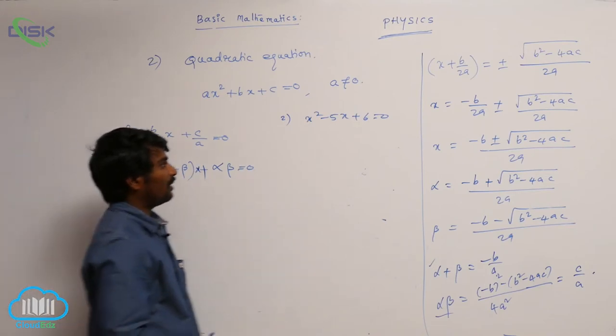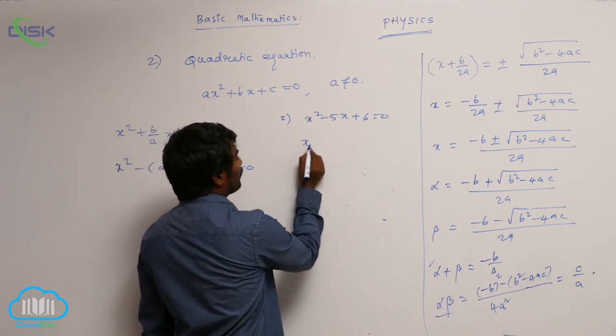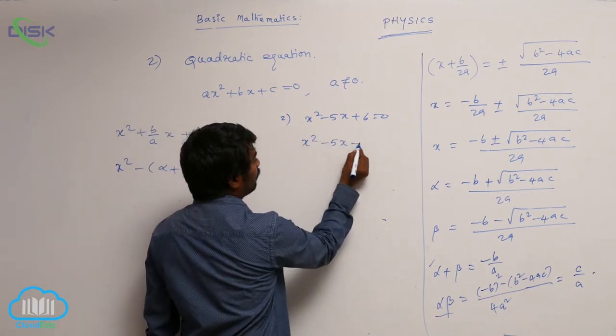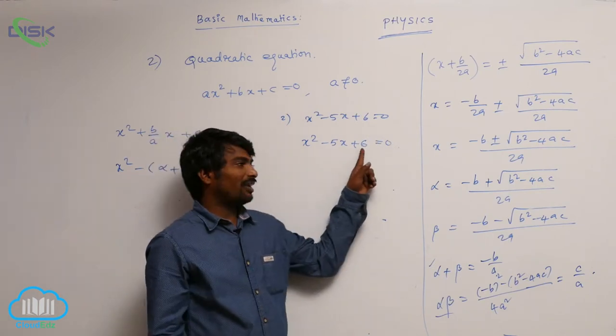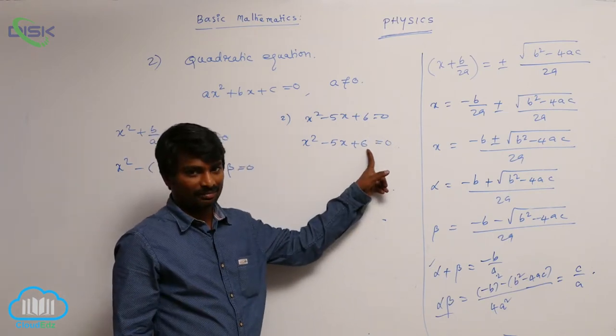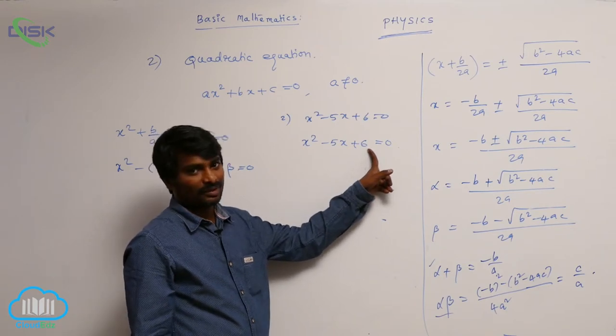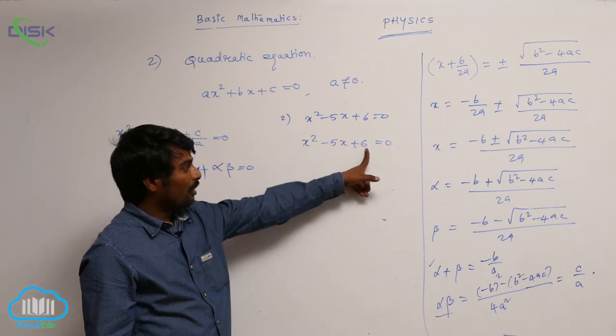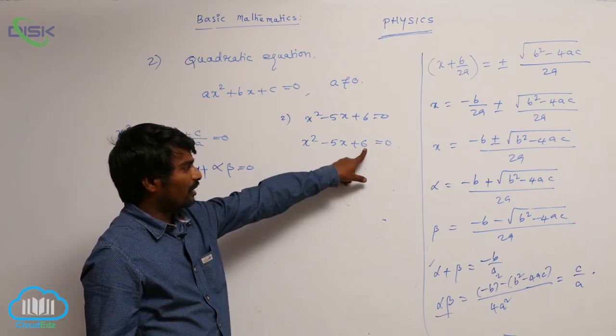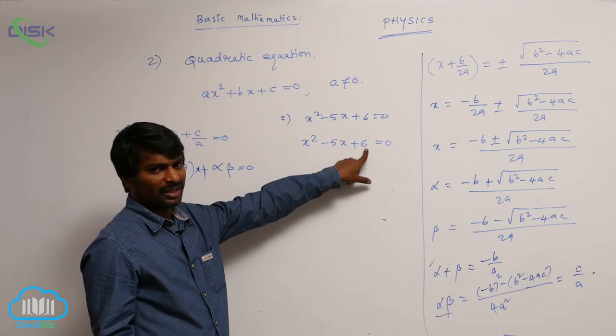In the same way here x square minus 5x plus 6 is equal to 0. Here c by a that is equal to 6. That means alpha into beta. So I can write it as alpha into beta. Alpha into beta means 3 into 2 also I can write.